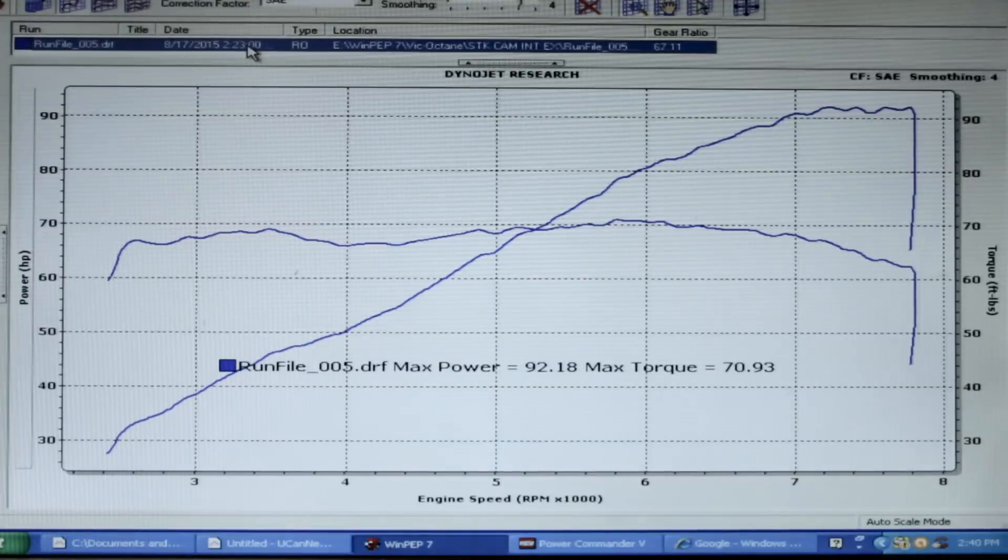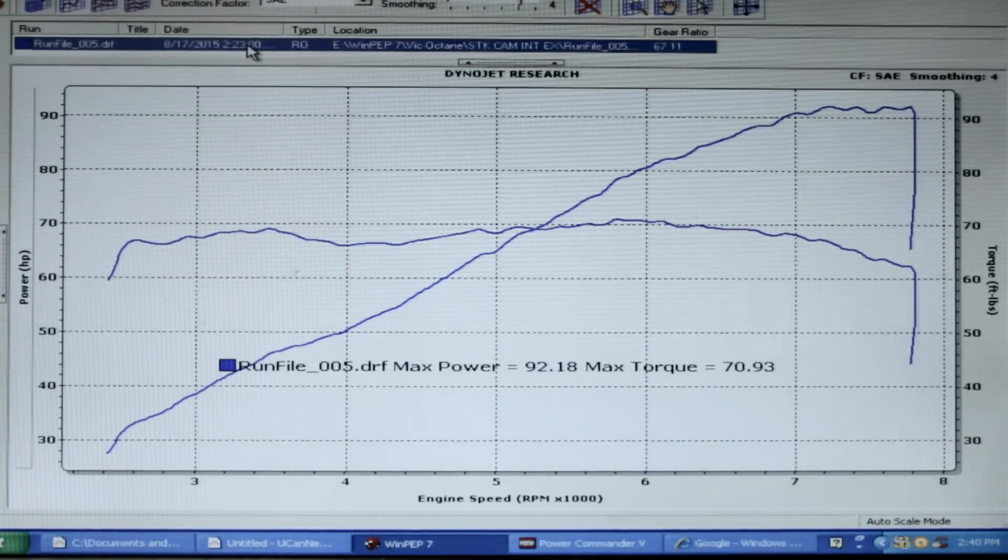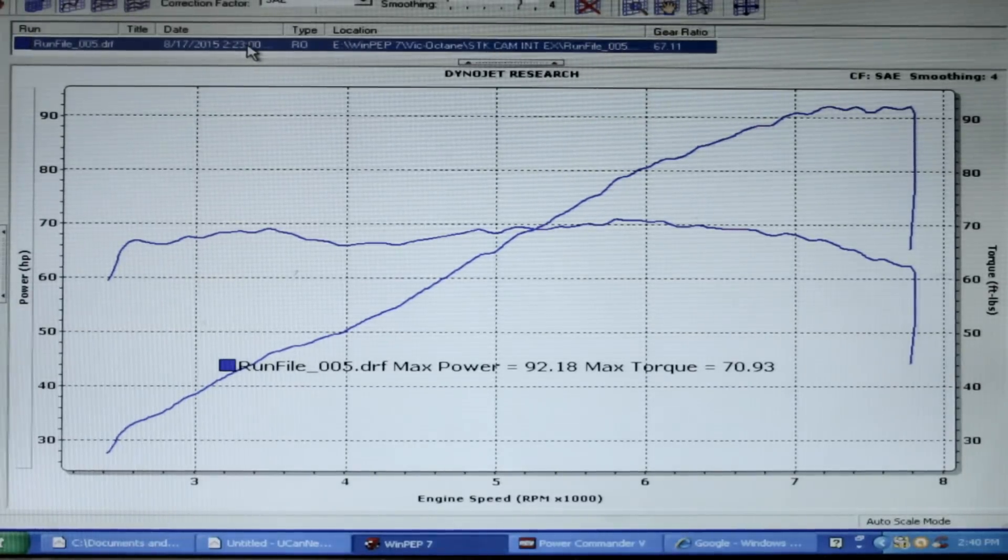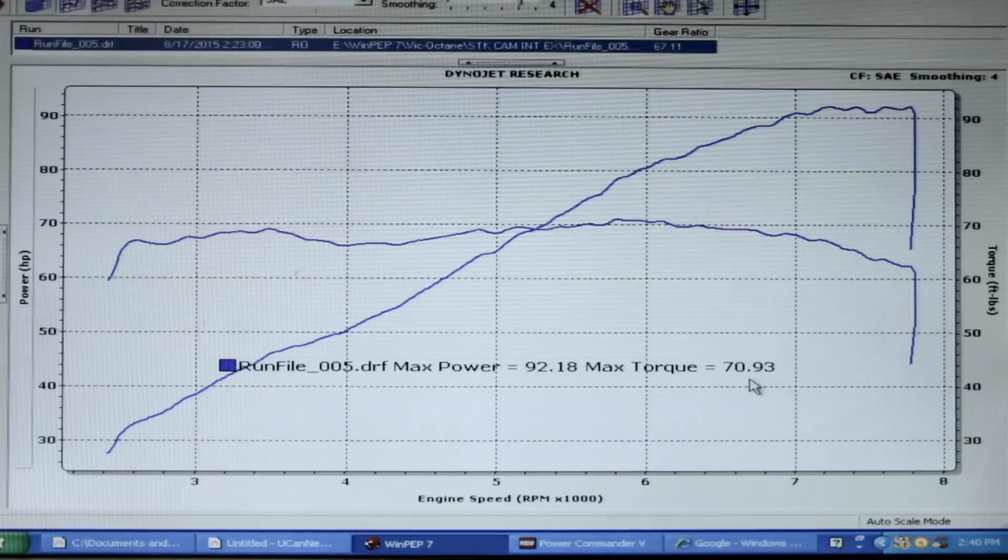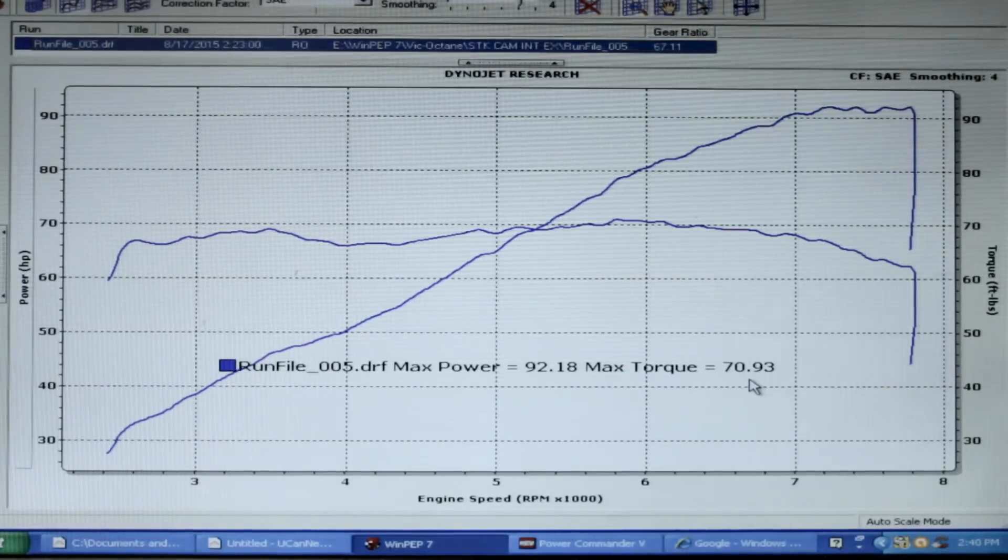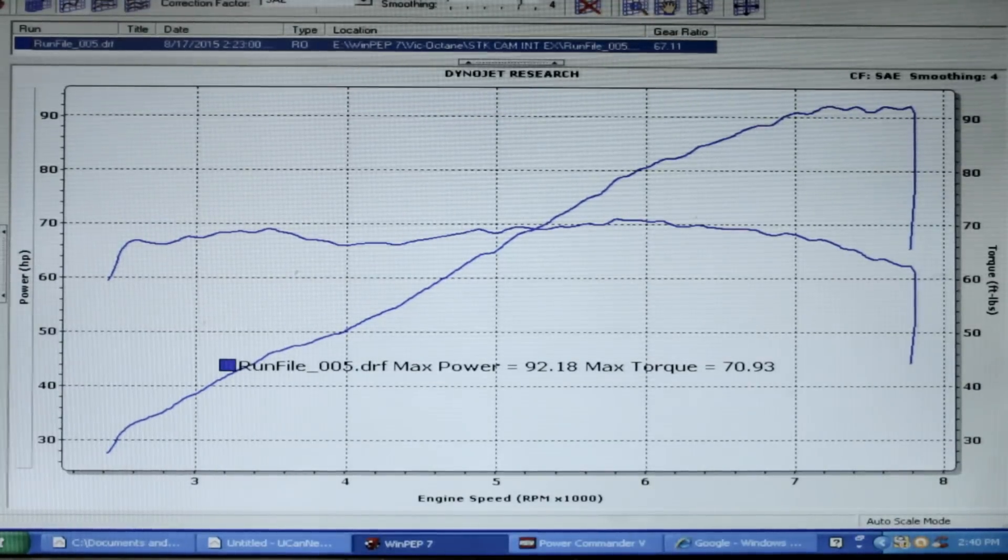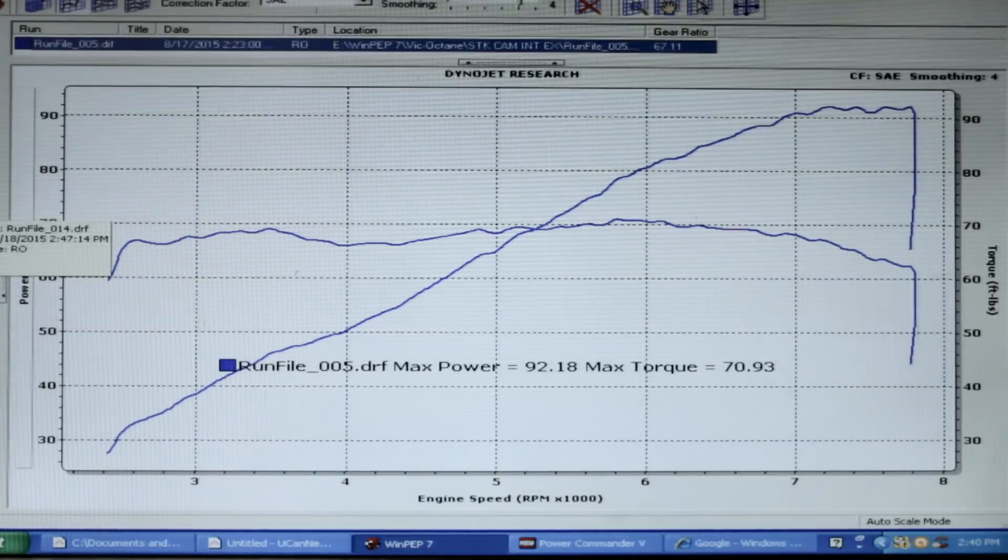Okay, so we just showed you the dyno graph of the Octane with our exhaust and intake system on it. Now we're going to go backwards a little bit and we're going to show you what we baselined at. Our baseline on this bike was 92 horse and 71 foot-pounds of torque. Not too shabby at all for a choked up little motorcycle.